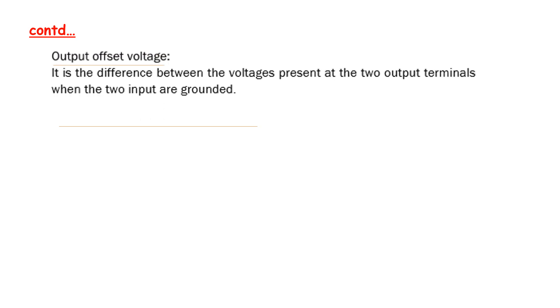Output offset voltage is the difference between the voltages present at the two output terminals.